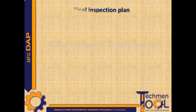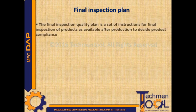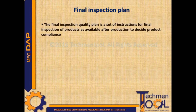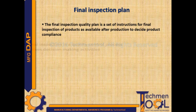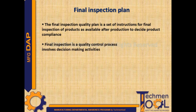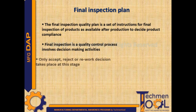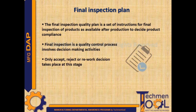Final inspection plan: The final inspection quality plan is a set of instructions for final inspection of products as available after production to decide product compliance. Final inspection is a quality control process that involves decision-making activities — only accept, reject, or rework decisions take place at this stage.